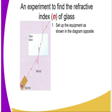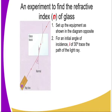We need to set up the equipment as shown in the diagram opposite. And for an initial angle of incidence to be 30 degrees, we trace the path of light as it moves through the glass block from air and out of the air once again. So we measure the angle of refraction, which is in the glass block, giving us the bending.